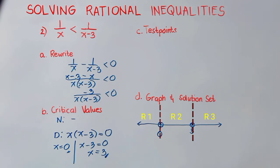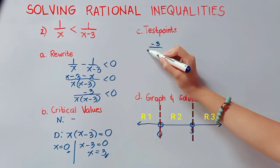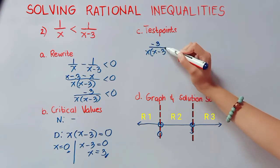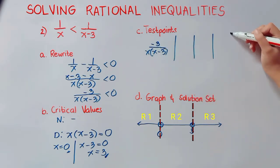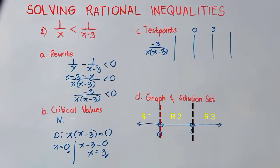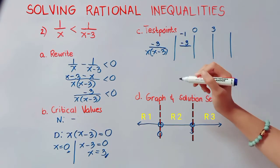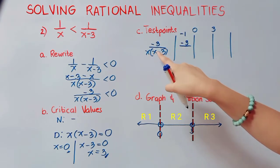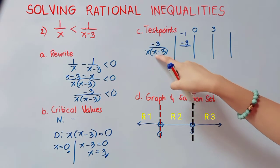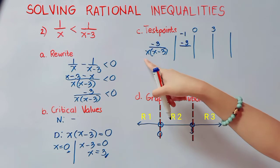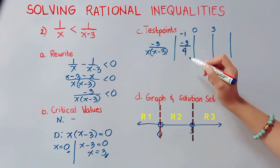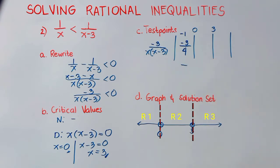We now have 3 regions to test, with critical values 0 and 3. For region 1, I will consider negative 1. We have negative 3 over: negative 1 minus 3 is negative 4, times negative 1 equals positive 4. Negative divided by positive is negative.